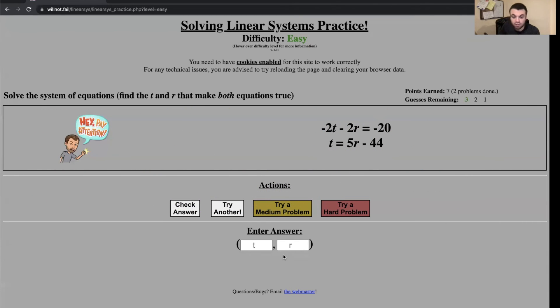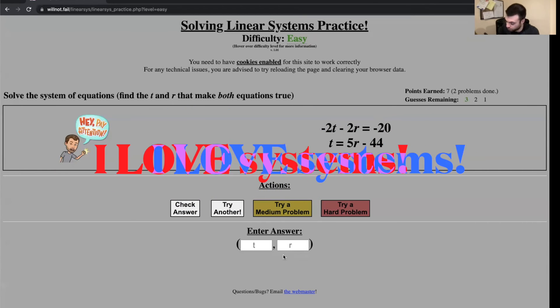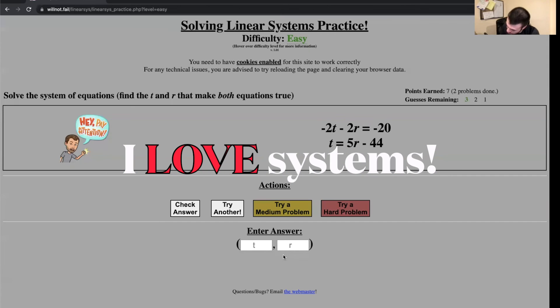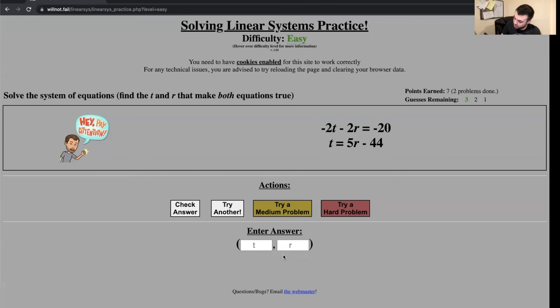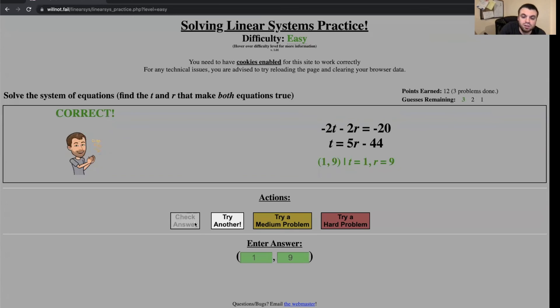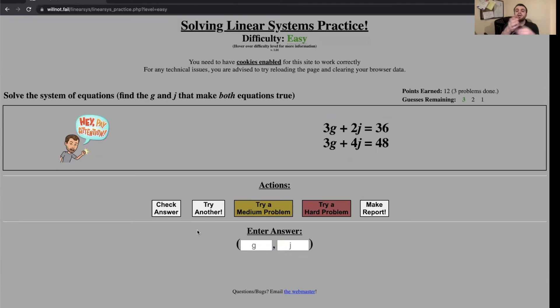So let's say I'm going to go ahead and do another problem. Here I'm just... r equals 9 and t equals 1. Perfect. I've got 12 points earned, three problems done.